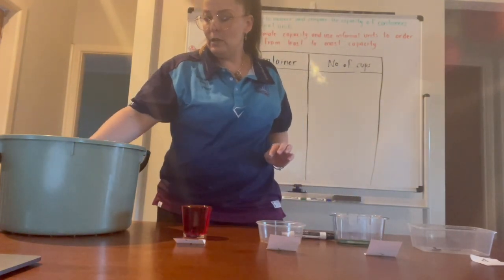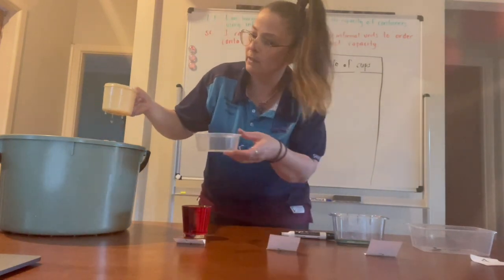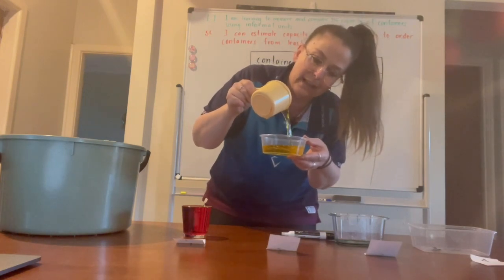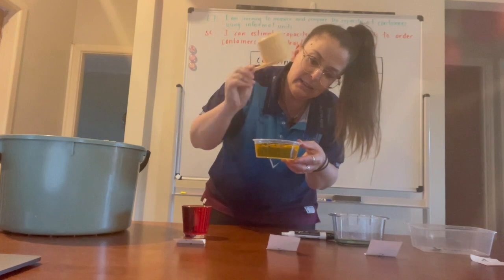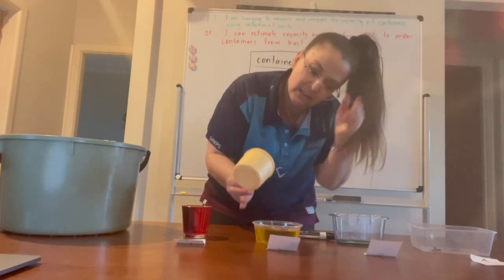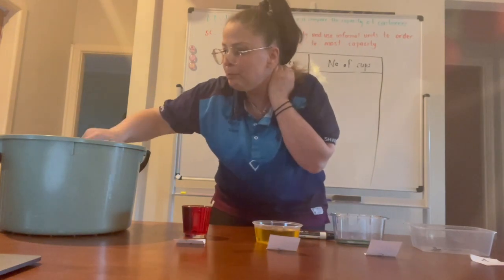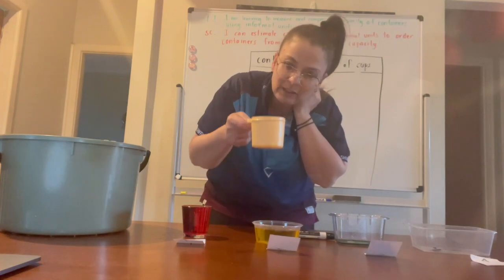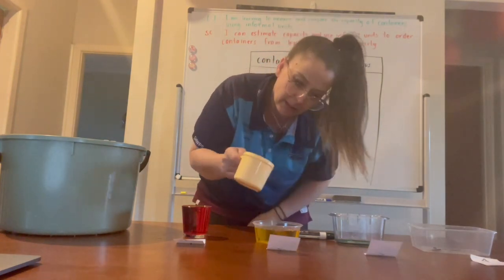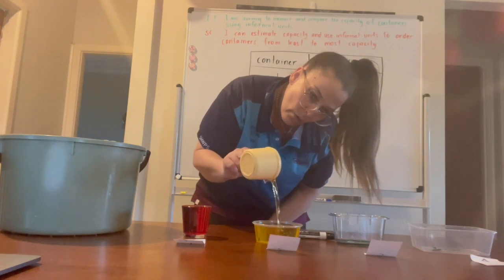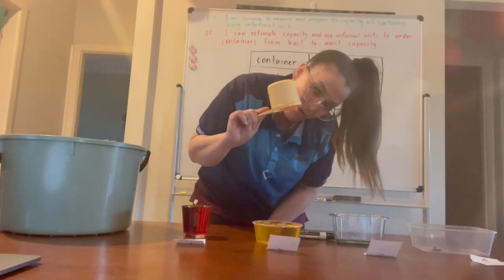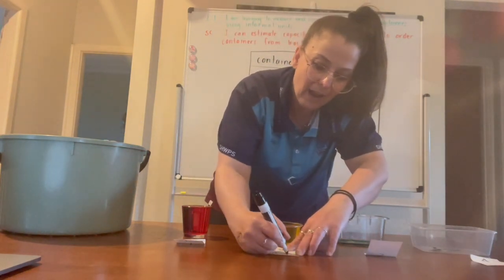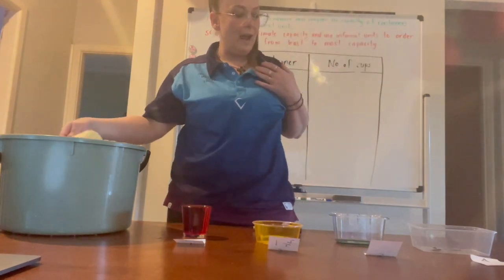Container number two. I'm using the same measuring cup and I'm going to fill this container all the way to the top to find out its capacity. It's just under one cup — I can fit a little bit more in there, about half more. So I'm going to say that this contains one and a half cups. Number two is one and a half cups.